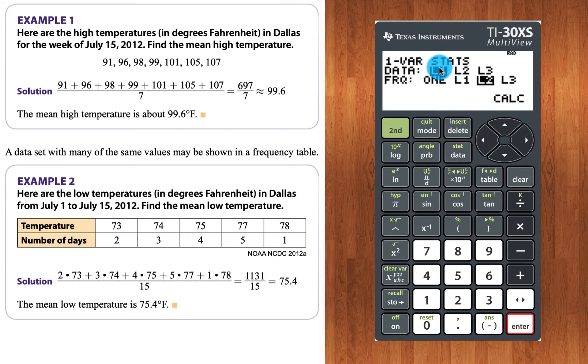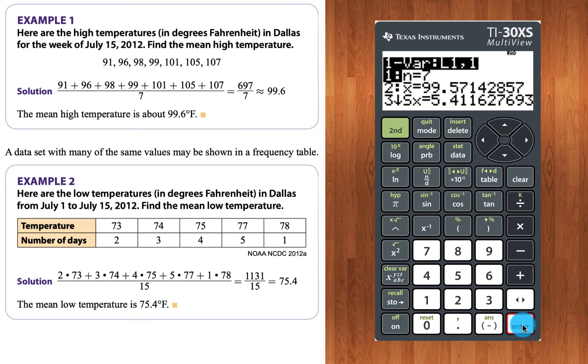Well, it'll say get the data from where and here L1 is selected. Now for frequency list, it should be set to 1 automatically, but I'm just going to make sure that it's on 1 right now and then it's ready to go. Calc, when you press ENTER...